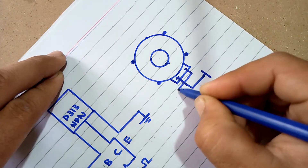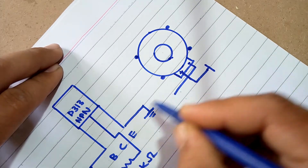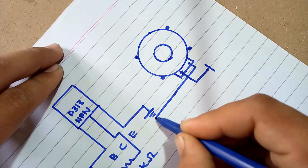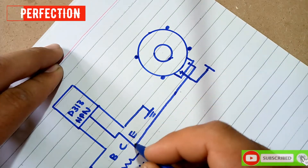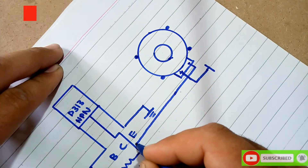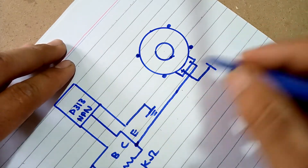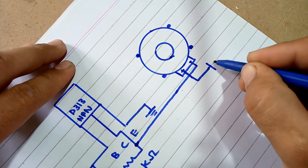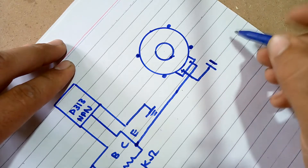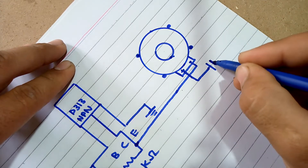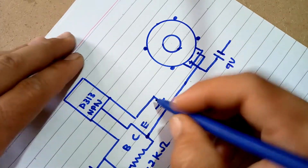Connect the ground into the collector of the transistor. Now the power source is a 9-volt working supply.